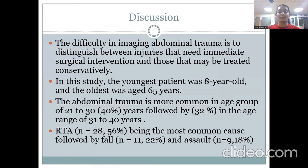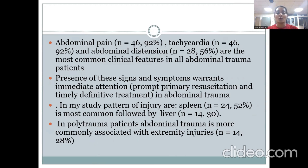In the discussion, the key challenge in imaging abdominal trauma is distinguishing injuries requiring immediate surgical intervention from those managed conservatively. In this study, abdominal trauma was most common in the 21 to 30 age group at 40%, followed by 32% in the 31 to 40 age range. Road traffic accident was the most common cause, followed by fall and assault. Abdominal pain, tachycardia, and abdominal distension were the most common clinical features. The spleen was the most commonly injured organ, followed by the liver. In polytrauma patients, abdominal trauma was most commonly associated with extremity injuries.